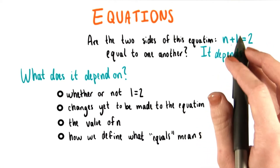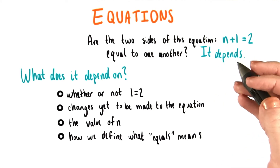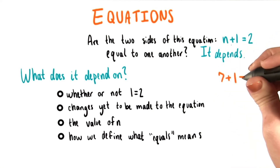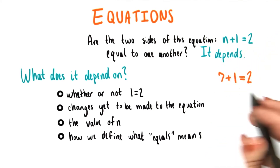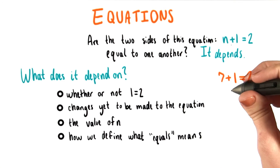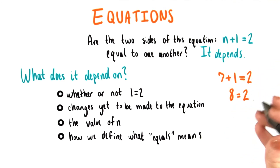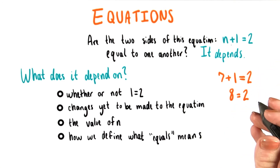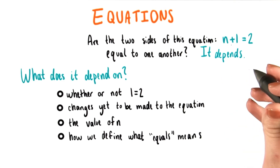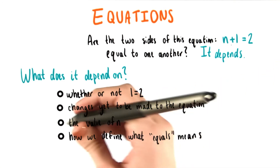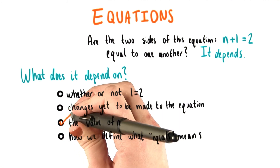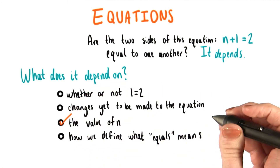If we pick n equals 7, for example, we'll end up with 7 plus 1 equals 2. Or, if we simplify, 8 equals 2. But that definitely can't be right. Either way, the answer to this question is the value of n.